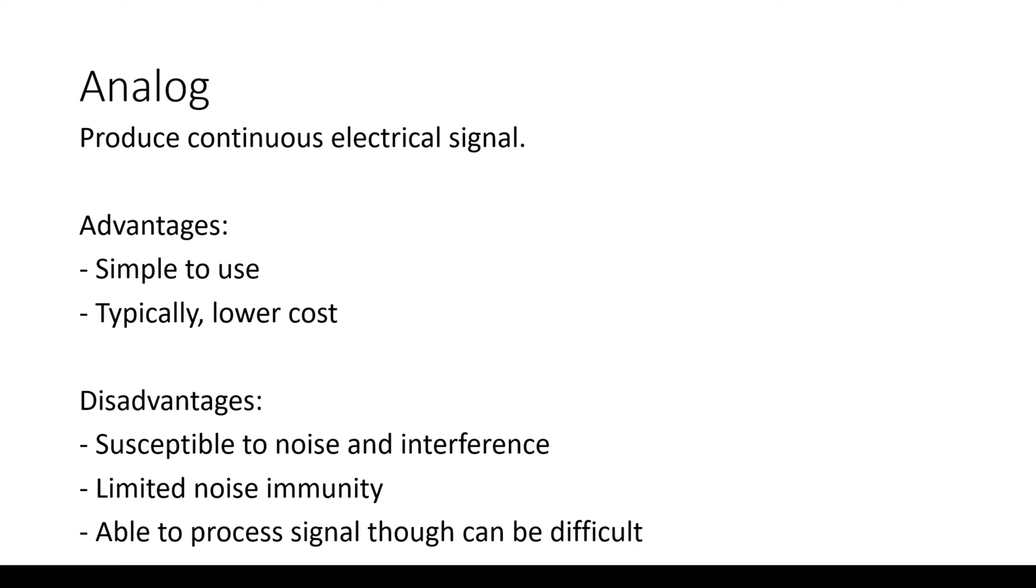The disadvantages associated with this is that it is susceptible to noise and interference. If you imagine your analog microphone on a very small voltage scale, you can be quite close to where noise could pick up and shoot through and this could affect your signal. We don't have much noise immunity and the ability to process this signal can be quite difficult. So we need to be quite careful with what we do with it.